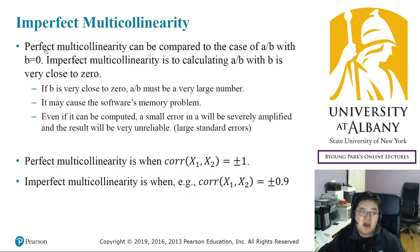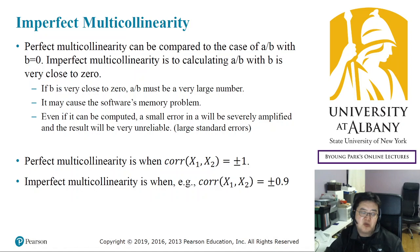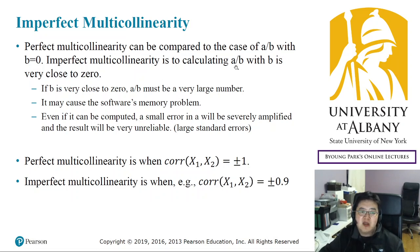Earlier, I compared perfect multicollinearity to calculating a over b when b equals 0. When the denominator is 0, we cannot calculate the fraction. Imperfect multicollinearity can be compared to the case where we calculate a over b, but b is very, very close to 0 — not exactly 0, but very close to 0.